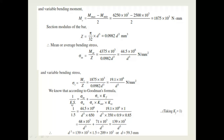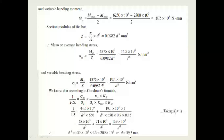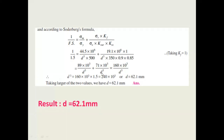According to the Goodman formula: 1 / FOS = (sigma_m / sigma_u) + (sigma_v × K_f) / (sigma_e × K_surface × K_size). Substituting all the values, we get the diameter d = 59.3 mm.